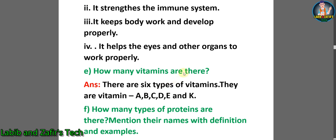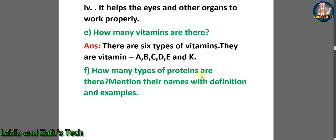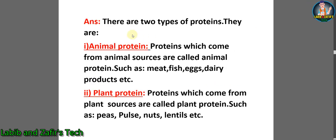E: How many vitamins are there? There are 6 types of vitamins — Vitamin A, B, C, D, E, and K. F: How many types of proteins are there? Mention their names with definition and examples. Answer: There are 2 types of proteins — 1. Animal protein: proteins which come from animal sources are called animal proteins, such as meat, fish, eggs, dairy products, etc. 2. Plant protein: proteins which come from plant sources are called plant protein, such as peas, nuts, lentils, etc.